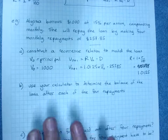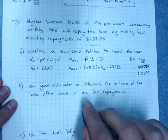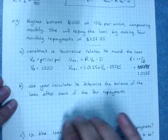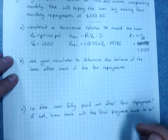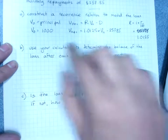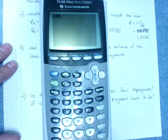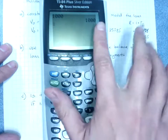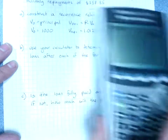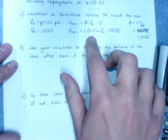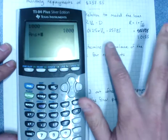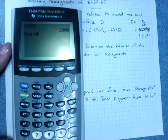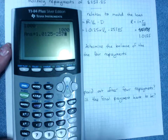You can use your calculator to recursively find each number in the pattern — the balance after one repayment, after two, after three, after four. Start by entering your principal 1000, then multiply by 1.0125 and subtract 257.85. Type: previous answer × 1.0125 − 257.85 and hit enter to get the balance after each repayment.